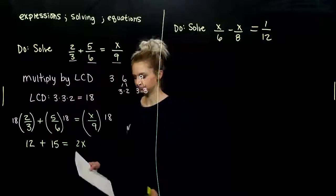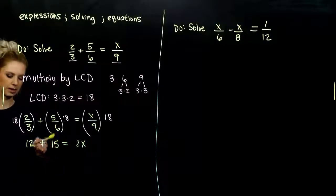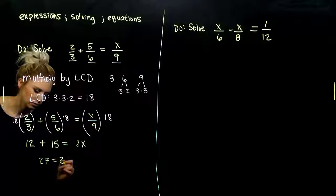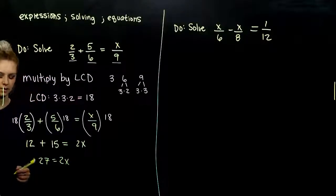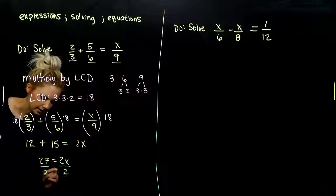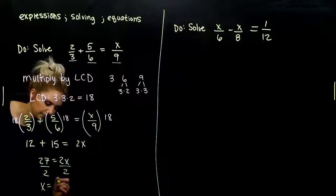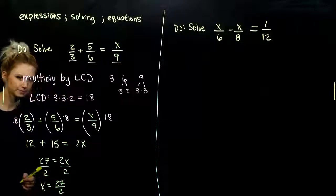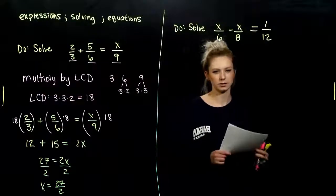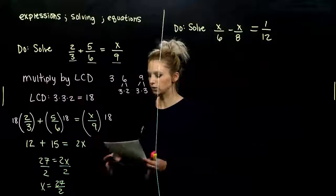And we can solve that now. So what do we have? On the left-hand side, when we combine 12 and 15, I've got 27 is equal to 2x. We need x on its own, so we divide both sides by 2. So in the end, x is equal to 27 halves. How can we check if you aren't certain? Plug it back in, make sure that it makes our equation true.